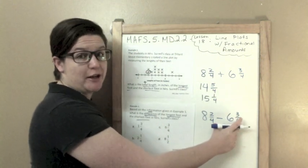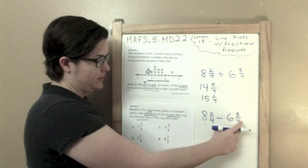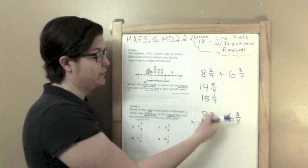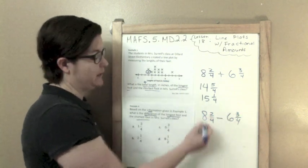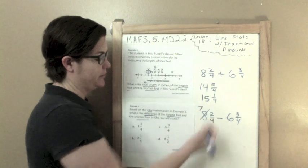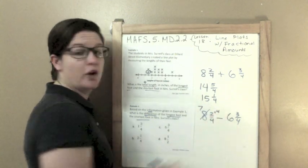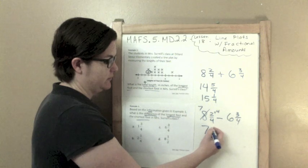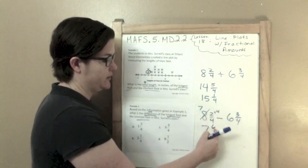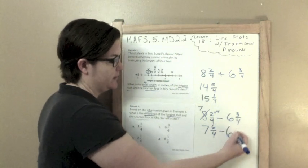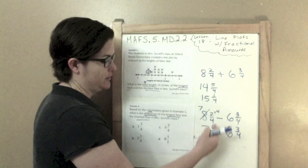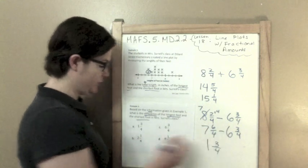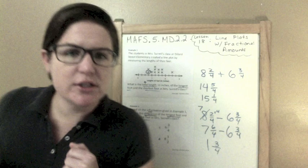We've got 8 and 2 fourths minus 6 and 3 fourths. Remember with subtraction, first our denominators match which is awesome. But we have to make sure this fraction is greater. And right now, 2 fourths is smaller than 3 fourths, so we need to do some regrouping. I'm going to take away one of these wholes, that becomes 7, and I'm going to add 4 equal parts to our numerator. So 7 and 6 fourths minus 6 and 3 fourths. Now I can do my fractions: 6 minus 3 would be 3, keep my denominator the same, and 7 minus 6 is 1. So 1 and 3 fourths is your answer.